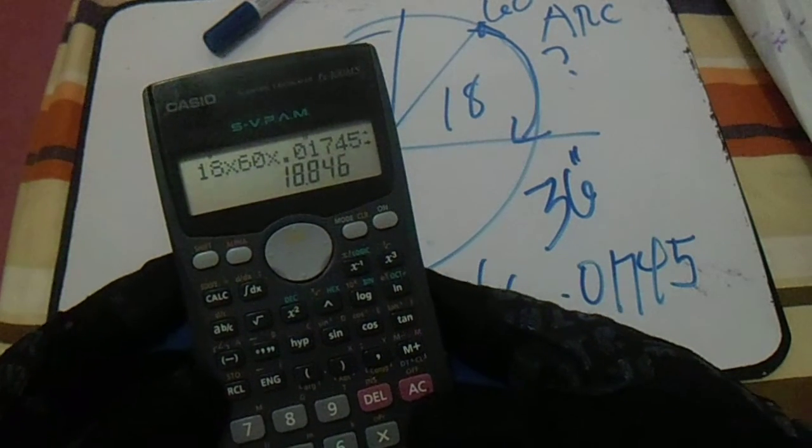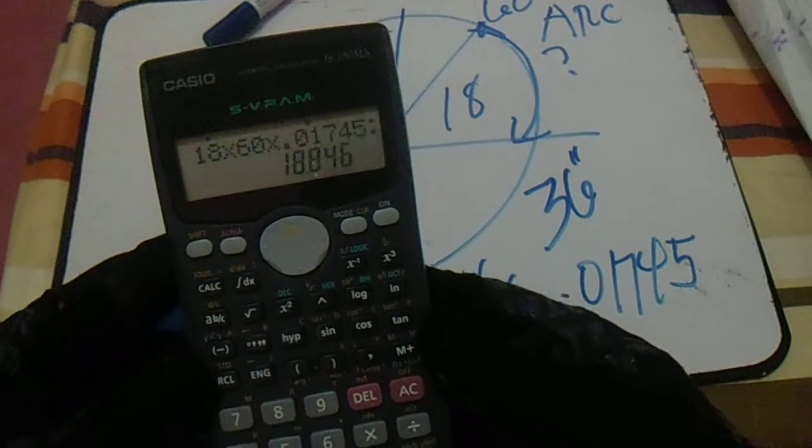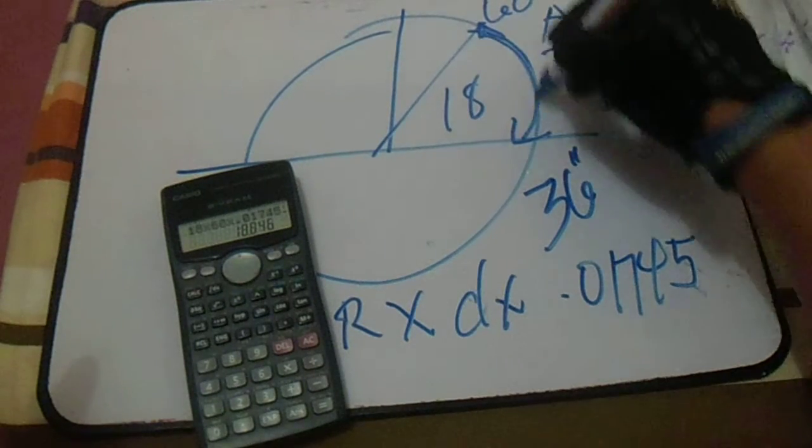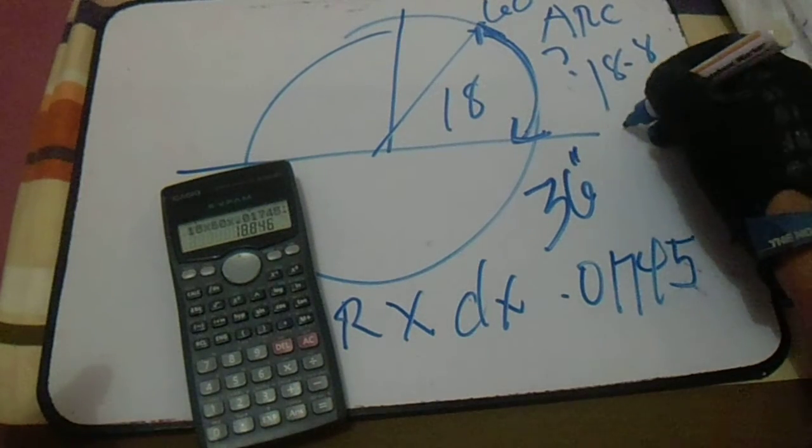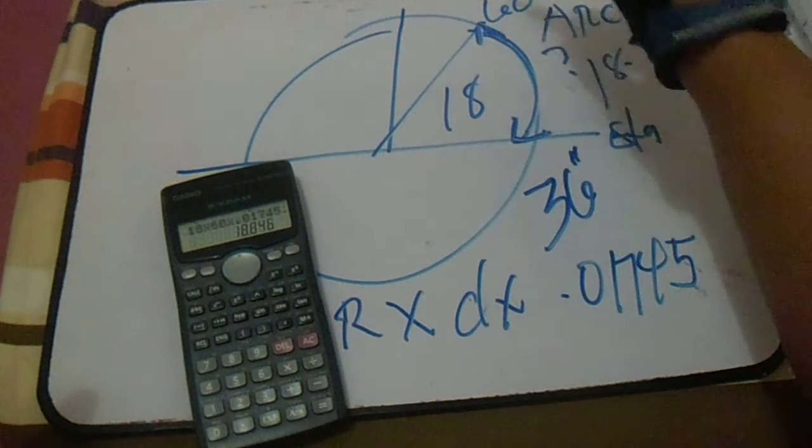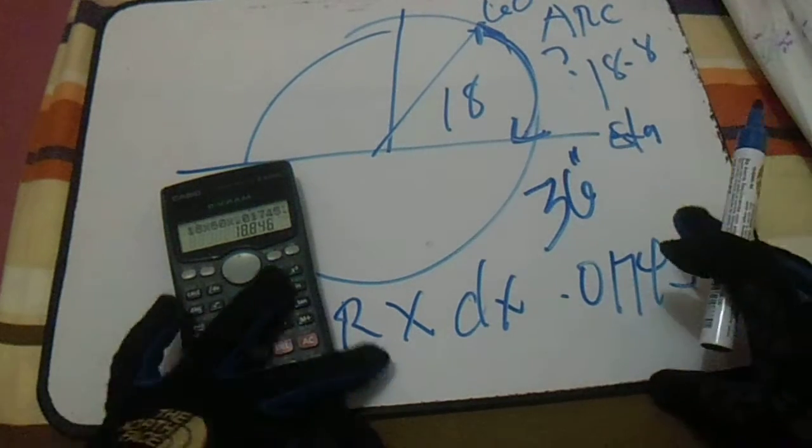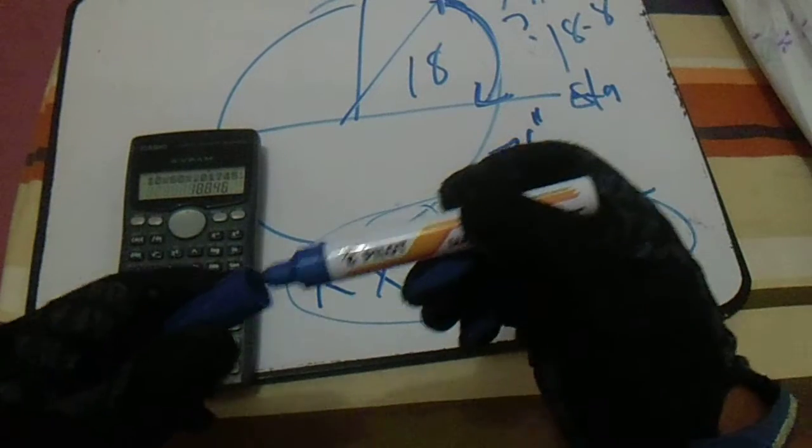This is 18.8, so our answer here is 18.8, our arc length. So this is our starting point, and from this 60 degrees our arc length is 18.8 based on our formula.